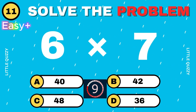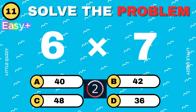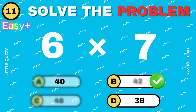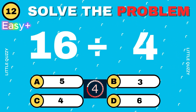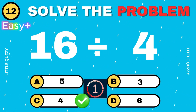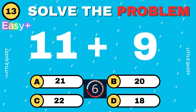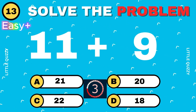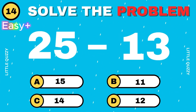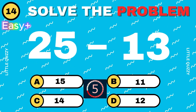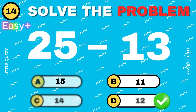What is 6 times 7? The right answer is 42. What is 16 divided by 4? The answer is 4. What is 11 plus 9? The correct answer is 20. What is 25 minus 13? The answer is 12.